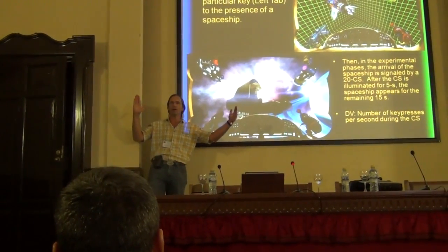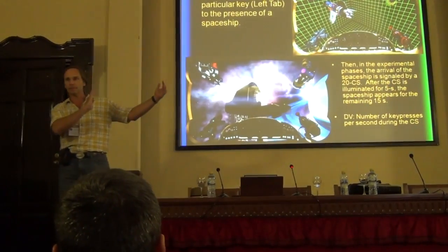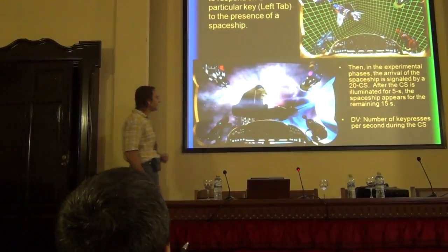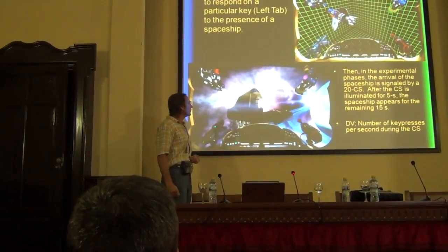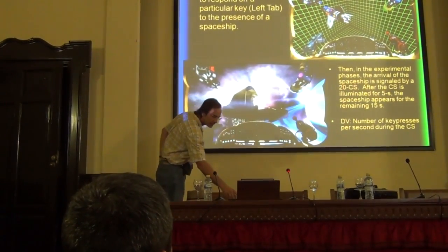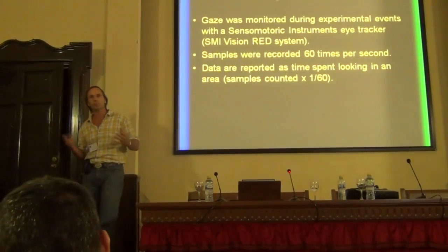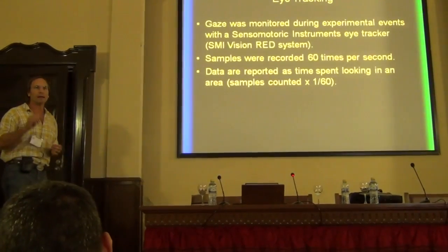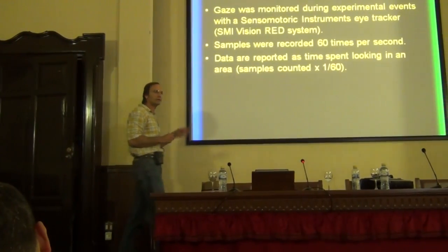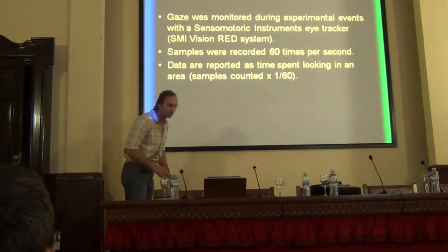The CS is 20 seconds long. During the first five seconds nothing happens, then the spaceship appears and remains for the rest of the CS. My dependent variable here is going to be gaze data per second during the CS. This is the screen that subjects are looking at, and I'm monitoring their gaze using an eye-tracking instrument — the RED system. I'm getting data samples at a rate of 60 per second, and I'm going to report these gaze data as the amount of time spent looking at particular areas of the screen.